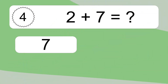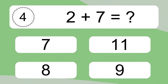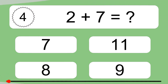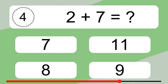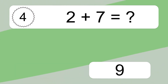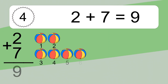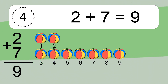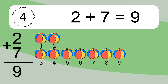2 plus 7 equals what? 2 plus 7 equals 9. Let's count it. 1, 2, 3, 4, 5, 6, 7, 8, 9.